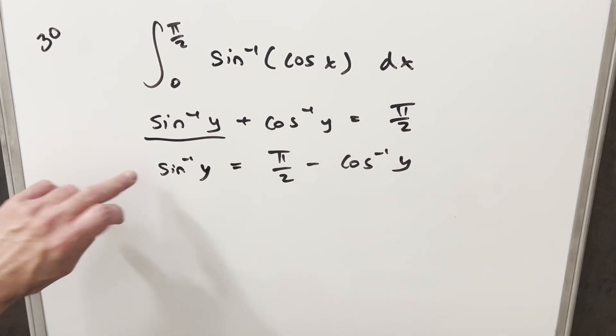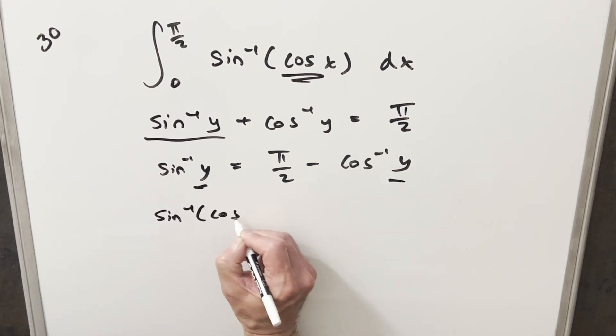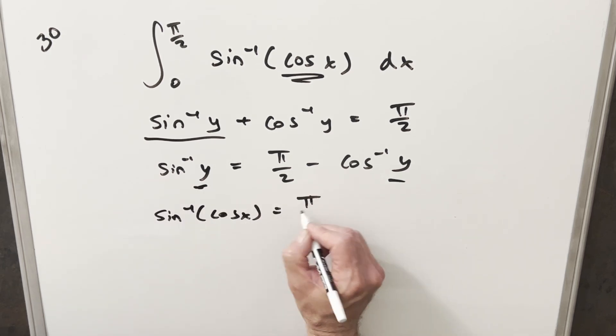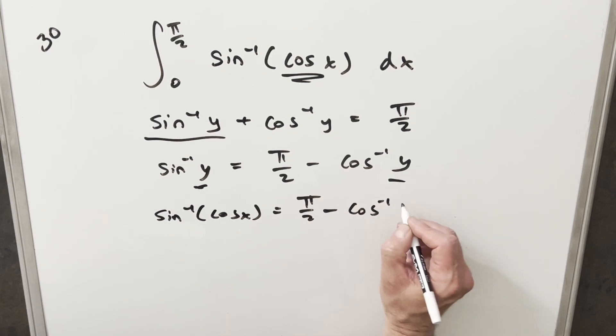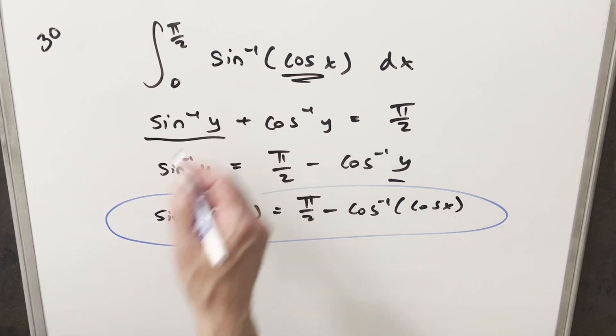Using this, it doesn't really matter what our y is, so we can just have our y be cos x. So we can then say that arcsin(cos x) is going to be just equal to π/2 minus arccos(cos x). Let's take this formula and plug it into our integral and continue.